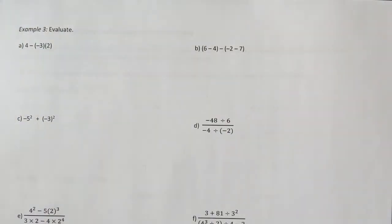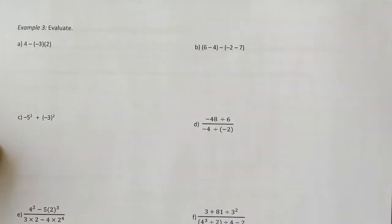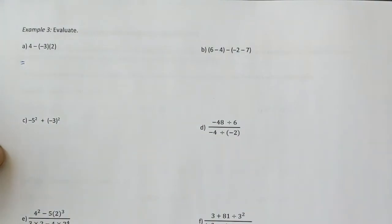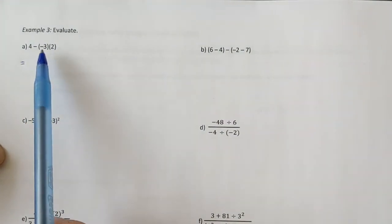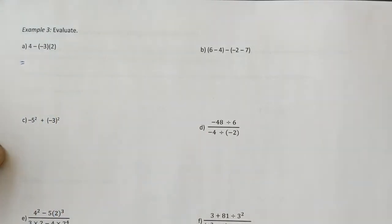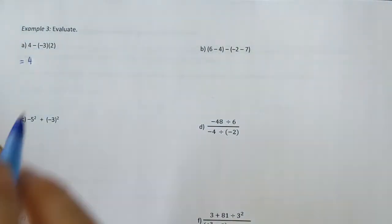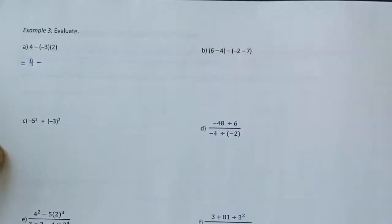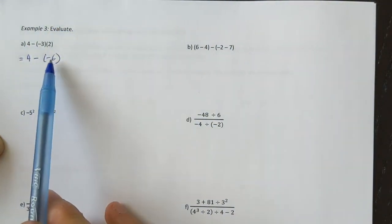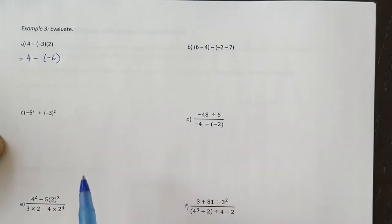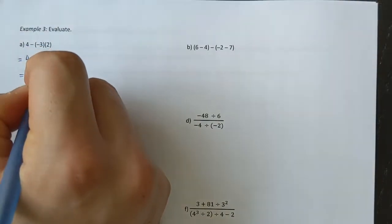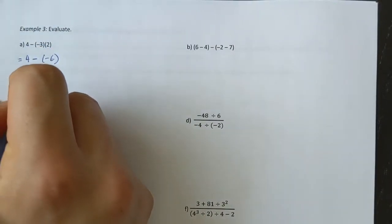The next page gets a little more complicated, but we'll go through each example together. Looking at the first one, negative 3 times 2 has to be performed first. Rewriting: 4 minus, and negative 3 times 2 is negative 6. Two negatives make a positive, so that becomes 4 plus 6, which equals 10.